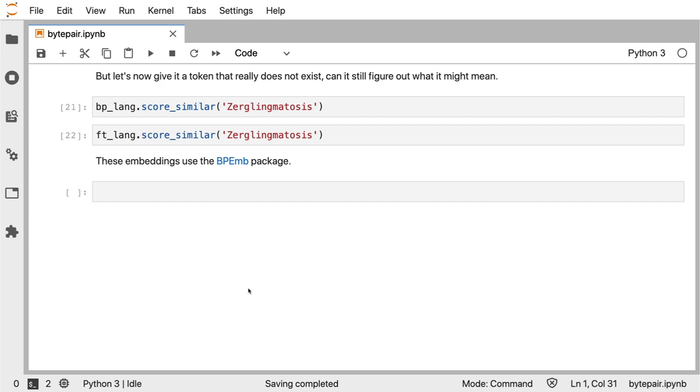Now as a final test, I figured it will be interesting to show you what would happen if we give it a word that doesn't exist. Something like zerglingmatosis. Now what I find interesting about this example is because we have this osis at the end, you could plausibly assume that it's probably about a disease.